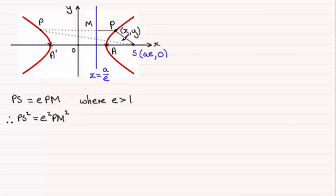Now for PS squared, the square of the distance between two points, that's going to be the difference between the x coordinates, AE minus x all squared, plus the difference between the y coordinates, that would be y minus zero all squared. So putting that in, we've got PS squared equals AE minus x all squared plus y squared. And then we've got E squared times PM squared. Well, the distance PM is just going to be from the y-axis to P, that would be x minus the y-axis to M, which will be A over E. So we've got E squared times x minus A over E all squared.